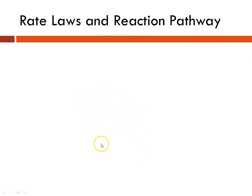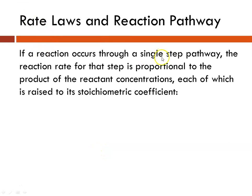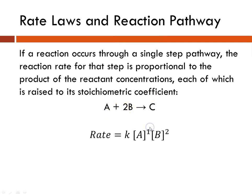We need to talk a little bit about the reaction pathway as well. If a reaction occurs through a single-step pathway, which is not very common, then the reaction rate for that step is proportional to the reactant concentrations, and they are each raised to the stoichiometric coefficient. So if we had a reaction A plus 2B goes to C, and it was a one-step single pathway, then the rate would be written as the constant times the concentration of A to the 1 and B squared. In general, this is not how rate laws are determined — they are determined experimentally using concentration and measured rates.